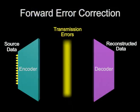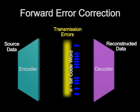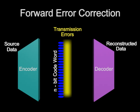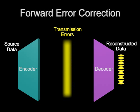During encoding, FEC interleaves redundant check bits with the data bits, constructing an n-bit code word. Afterward, the code word is transmitted to the receive end.